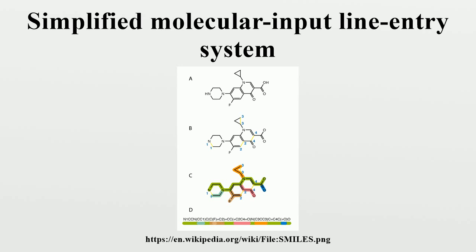Bonds between aliphatic atoms are assumed to be single unless specified otherwise and are implied by adjacency in the SMILES string. For example, the SMILES for ethanol can be written as CCO. Ring closure labels are used to indicate connectivity between non-adjacent atoms in the SMILES string; cyclohexane and dioxane can be written as C1CCCCC1 and O1CCOCCC1 respectively. For a second ring, the label will be 2, and so on. After reaching 9, the label must be preceded by a percent sign in order to differentiate it from two different labels bonded to the same atom.